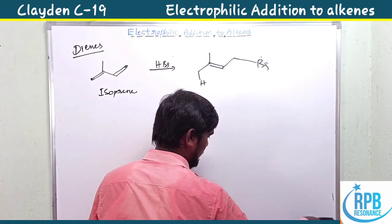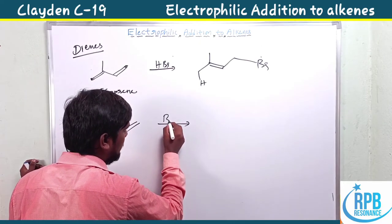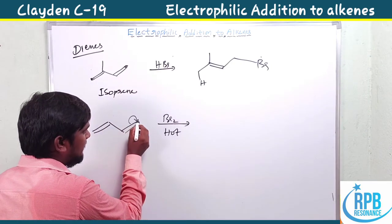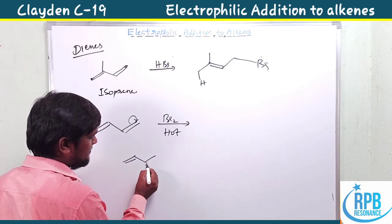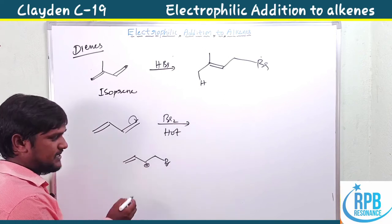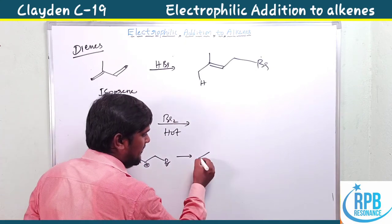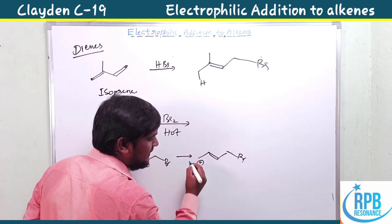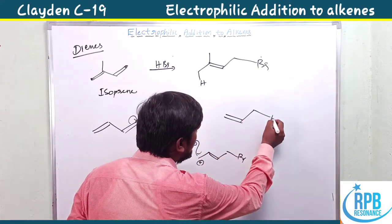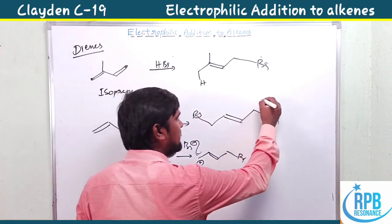Prenyl bromide is the product. Now let's consider bromination of 1,3-butadiene under hot conditions (high temperature) with Br₂. One bromine is the positive electrophile and the other is the negative nucleophile. Under vigorous/high-temperature conditions, the double bond shifts to form a sterically less crowded cation, which is then attacked by Br⁻. The predominant product under thermal conditions is the thermodynamic product.